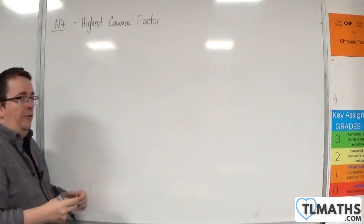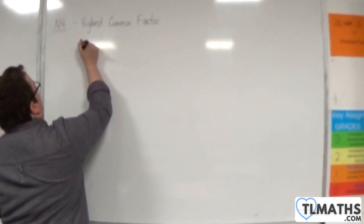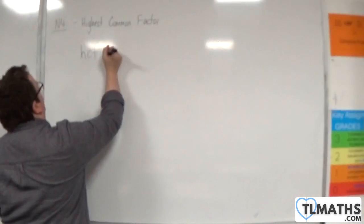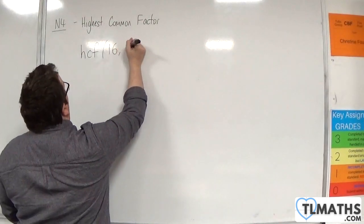So for this, we write it as HCF. Let's say we're going to find the highest common factor of 16 and 20.